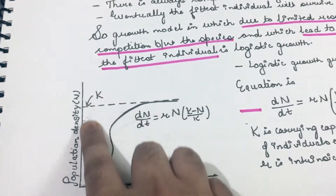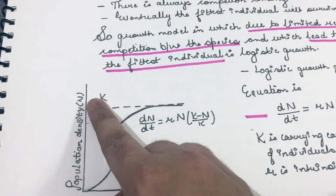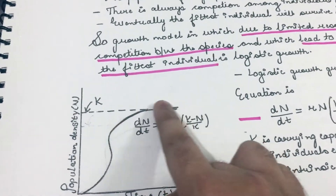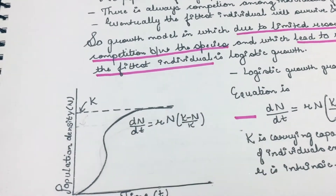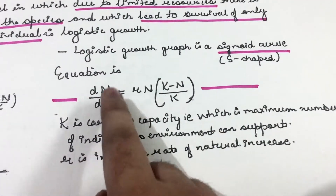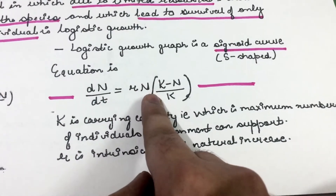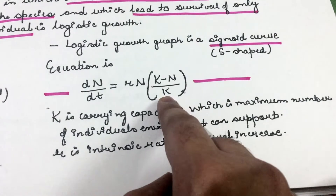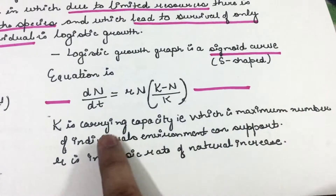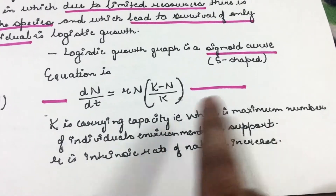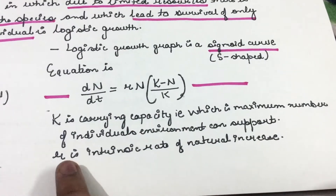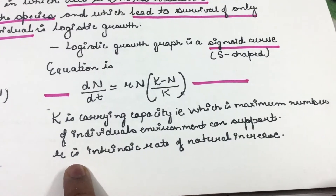The logistic growth graph is an S-shaped or sigmoid curve. If we plot a graph between population density and time in the logistic growth model, we get an S-shaped or sigmoid curve. The equation for logistic growth is: dN/dt = rN × (K − N)/K, where K is the carrying capacity — the maximum number of individuals the environment can support — and r is the intrinsic rate of natural increase, which equals per capita birth rate minus per capita death rate.